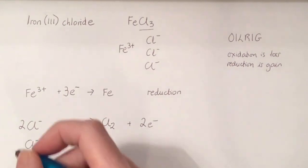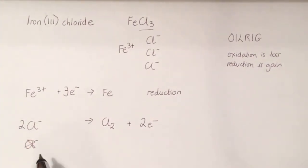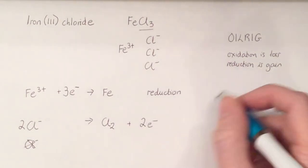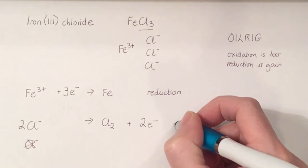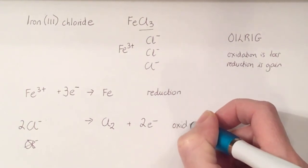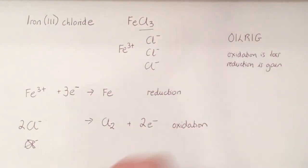And as I said last time, we should check the charges. So two minuses over here, two minuses over there. That's okay. So we've got our chloride here losing electrons to form chlorine. Oxidation is loss of electrons. So this reaction is an oxidation reaction.